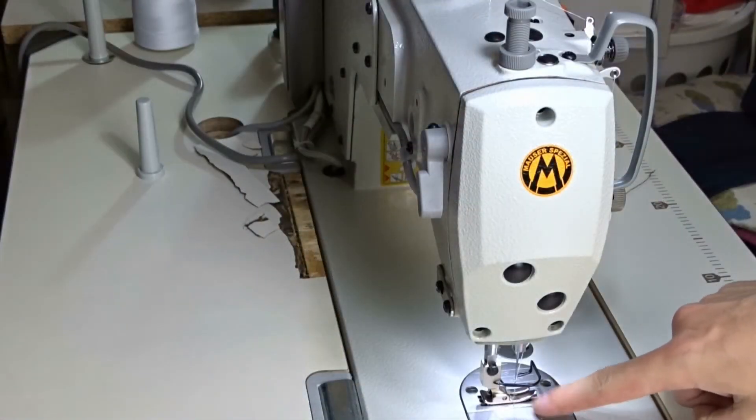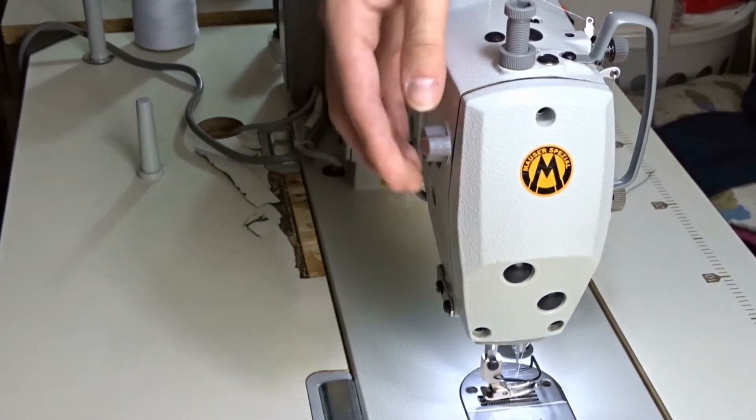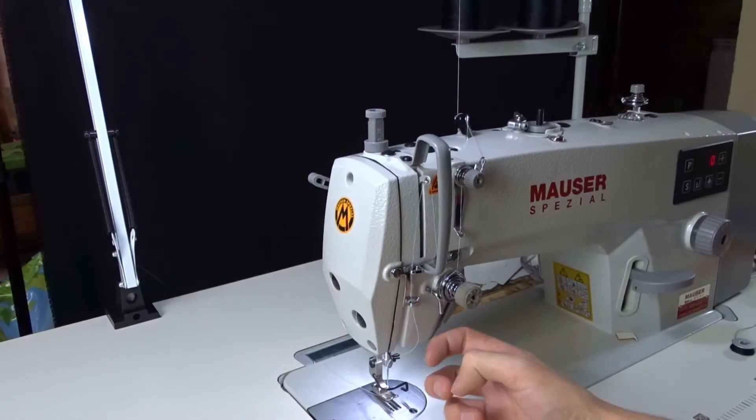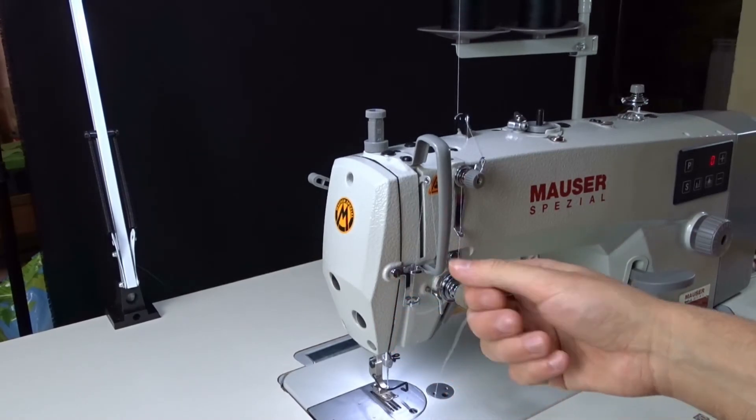The bobbin will be winding while you are sewing. If you want only to wind the bobbin, raise the presser foot, remove the thread from the needle and hold it.